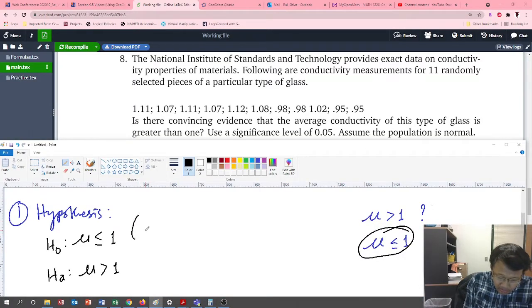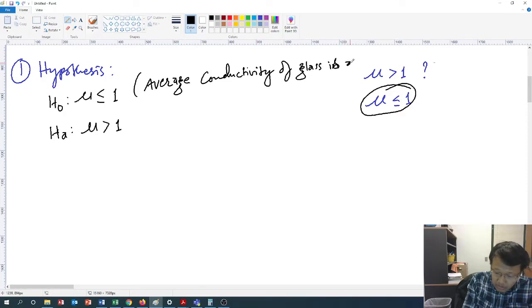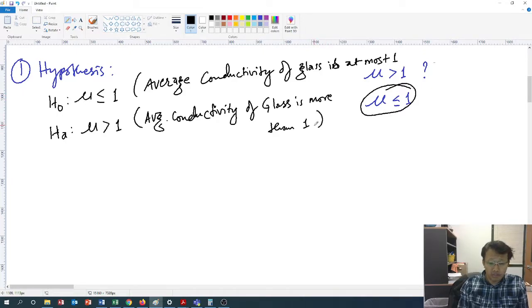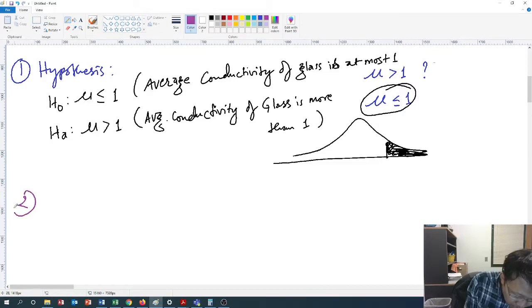So we can write down this is average conductivity is at most one, or this is average conductivity is more than one. And you can clearly realize here also that if you look at this alternative hypothesis, this will give you the kind of test or kind of tail that we are looking for. So if this is the distribution, then you may want to think that this is the shaded portion that we are going after.